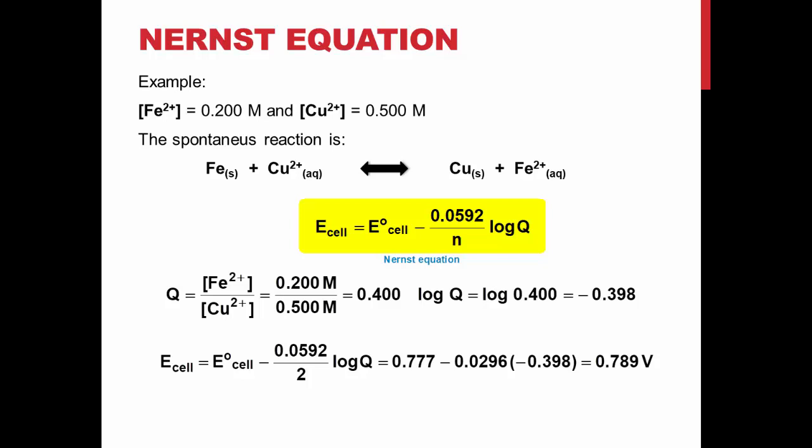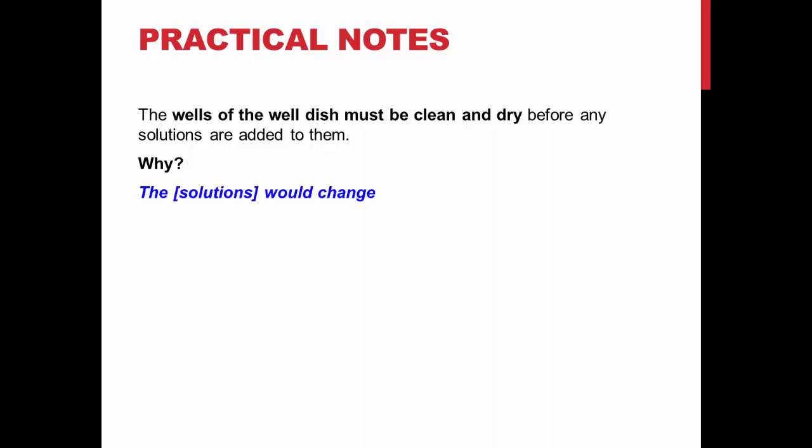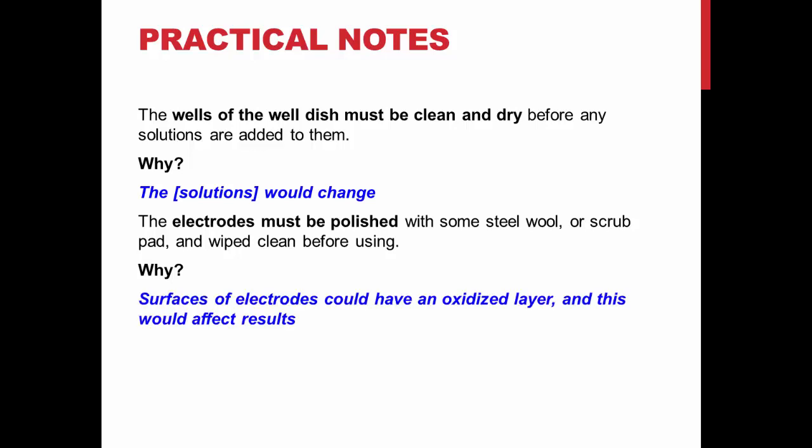Here are a couple of important things to remember when in the lab. The wells you use for your experiment need to be clean and dry. Water or contaminants could affect the concentration of ions in your solutions, which would have a negative effect on your results. The electrode you use also needs to be scrubbed with steel wool or a scrub pad and dried, to remove any oxidized material that could get in the way of your experiment.